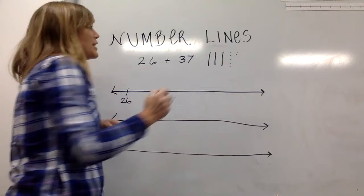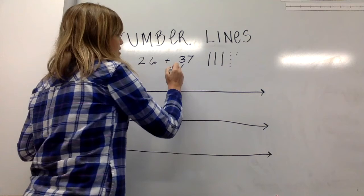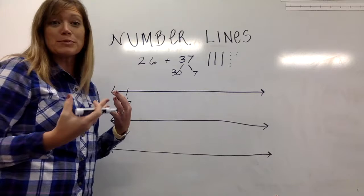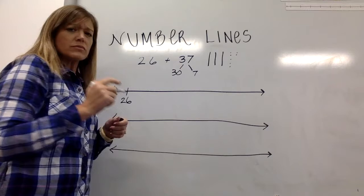Once students have this representation and understanding they also may think of 37 in numbers breaking it apart as 30 and 7. How does all this help me? It helps me make quicker jumps to get to my final answer.